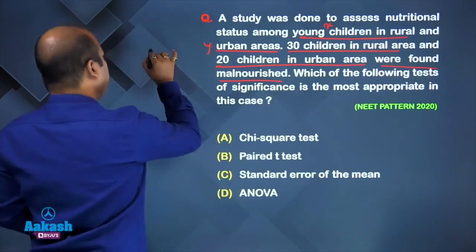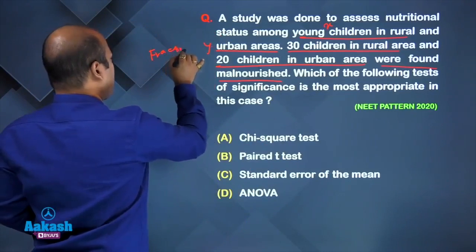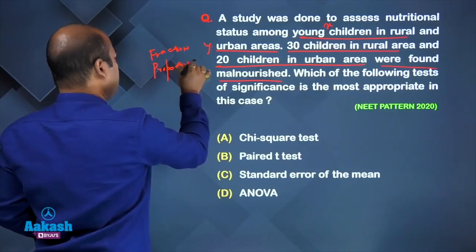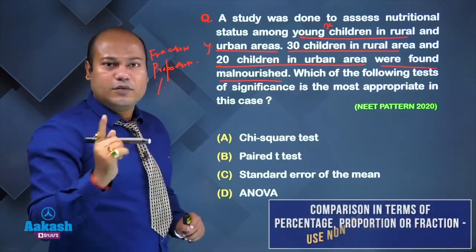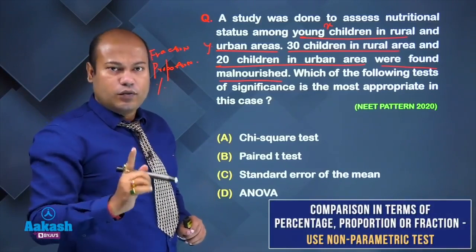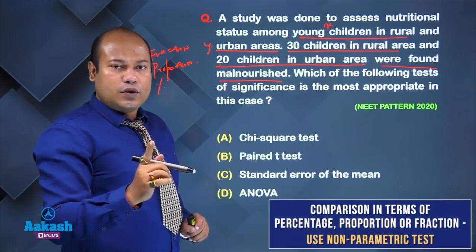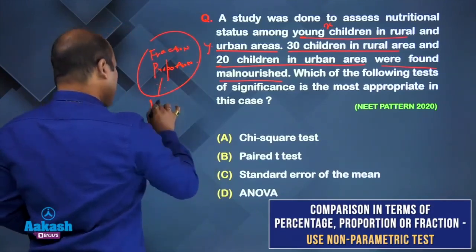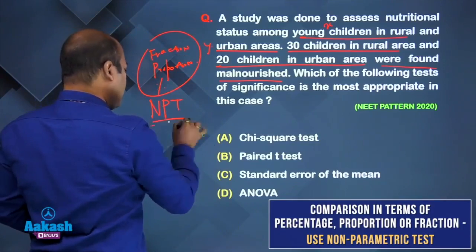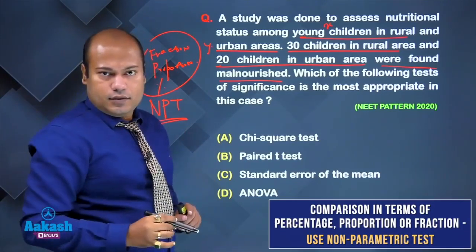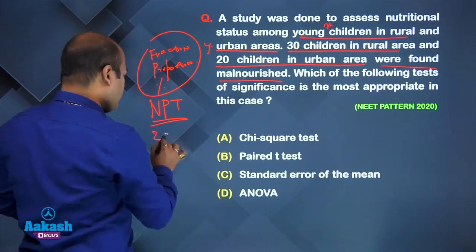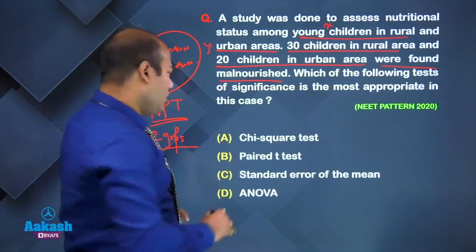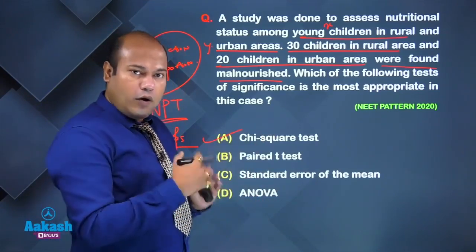Since comparison is in terms of fraction, proportion, or percentage, we use a non-parametric test. There are two groups, so the answer will be the chi-square test. To summarize the decision approach: first determine the number of groups, second check whether any intervention is done, and third determine whether comparison is done in terms of mean/SD or fraction/proportion/percentage.